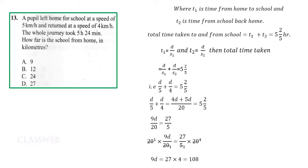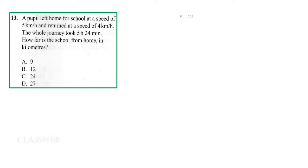So 9d equals 27 multiplied by 4, which is 108. Now 9d equals 108 — we divide both sides by 9 to make d the subject. Simplifying, d equals 12. This is the distance from home to school or from school back home, so the answer is 12 kilometers.